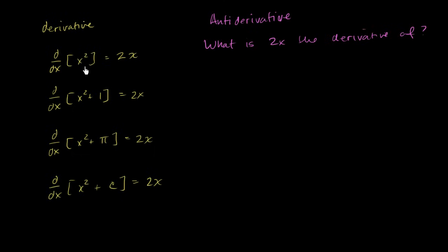And so you could say, well, 2x is the derivative of x squared. You could also say 2x is the derivative of x squared plus 1. You could also say that 2x is the derivative of x squared plus pi. I think you get the general idea. So if you wanted to write it in the most general sense, you would write that 2x is the derivative of x squared plus some constant. So this is what you would consider the antiderivative of 2x.